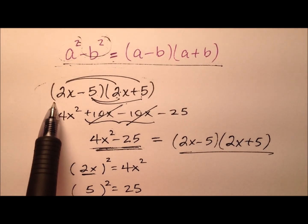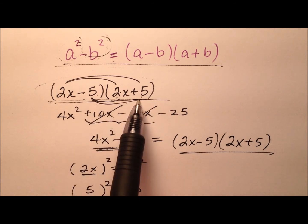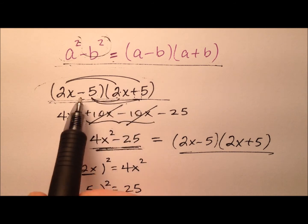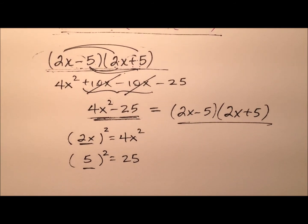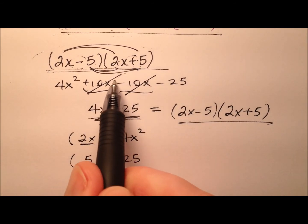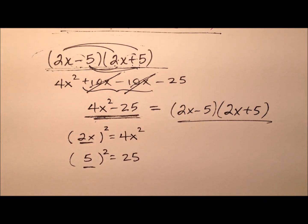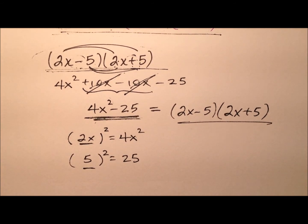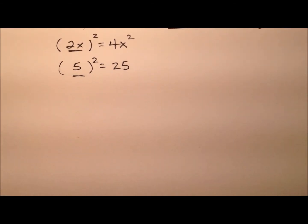So I worked first using an example where I multiplied two binomials that happened to be conjugates of one another — exactly the same except the sign in the middle was different. When we multiply, those middle terms cancel and we're left with the difference of two squares, which we then worked backwards and factored.